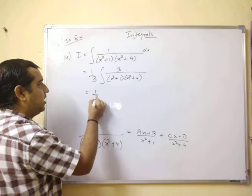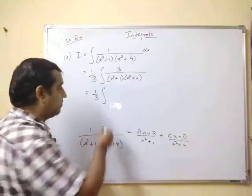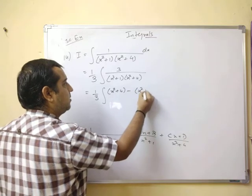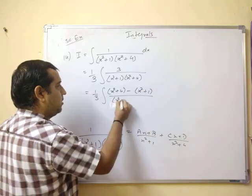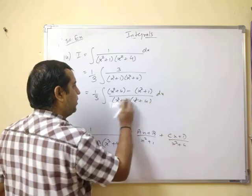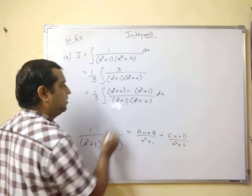Now, as I said, 3 is the difference of these two, you can add this as x square plus 4 minus x square plus 1 upon x square plus 1 into x square plus 4 dx. You can write in this way.